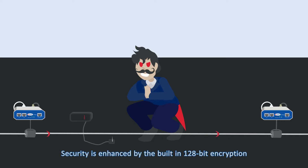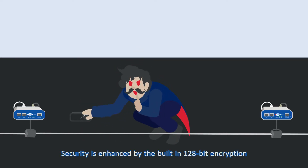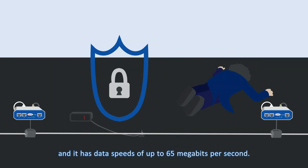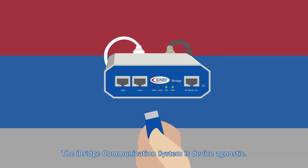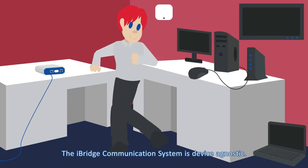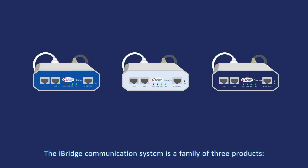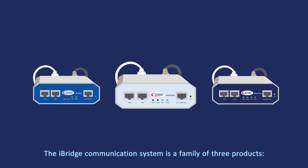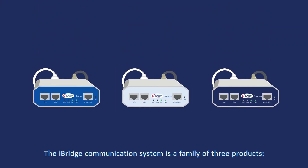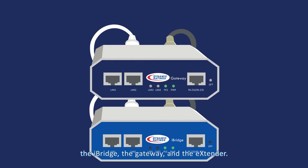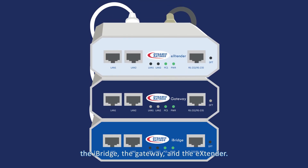Security is enhanced by the built-in 128-bit encryption and it has data speeds of up to 65 megabits per second. The iBridge communication system is device agnostic and is a family of three products: the iBridge, the gateway, and the extender.